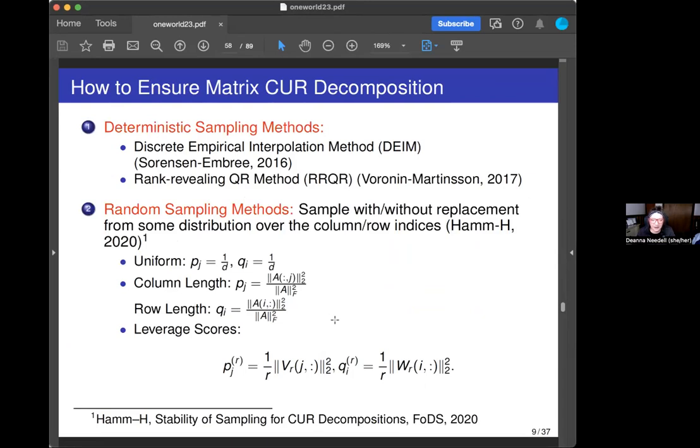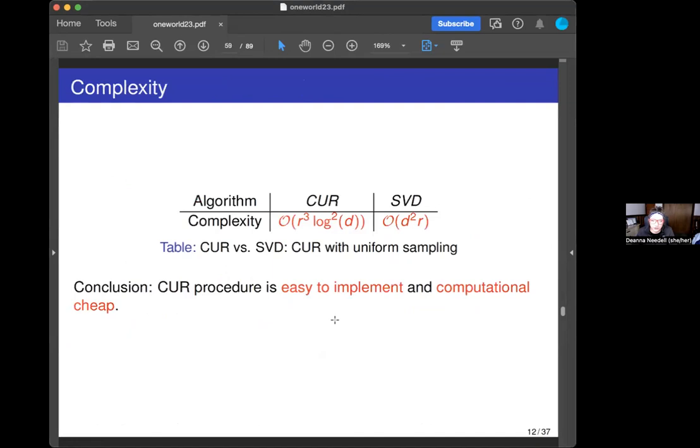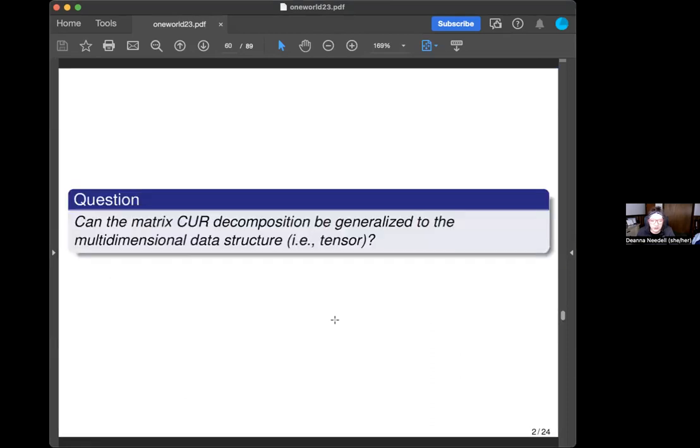I won't go into too much detail on how you actually ensure that you can get a CUR decomposition. There are a couple of different ways. There are some random sampling methods and deterministic ones. There are some interesting results there. Complexity is not bad at all. It's actually less than SVD for reasonable ranks. So it's easy to implement and computationally efficient.